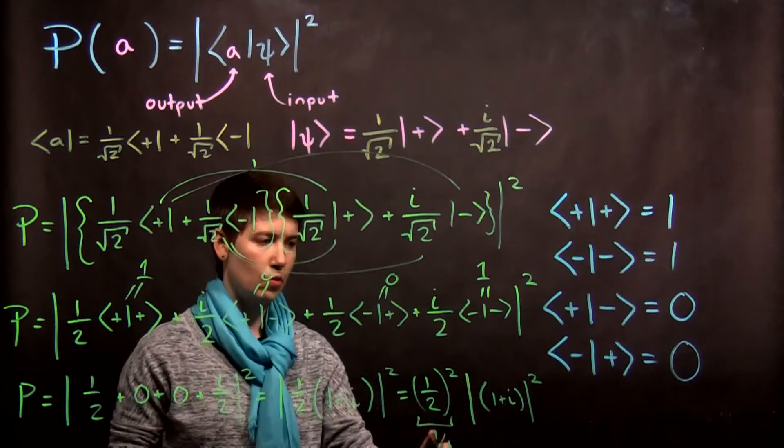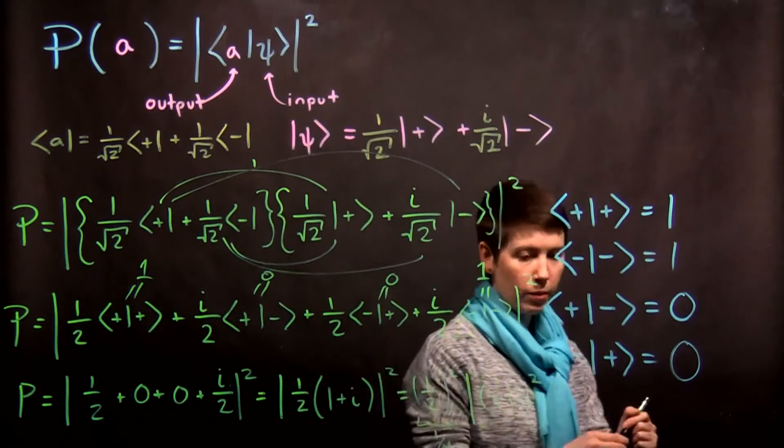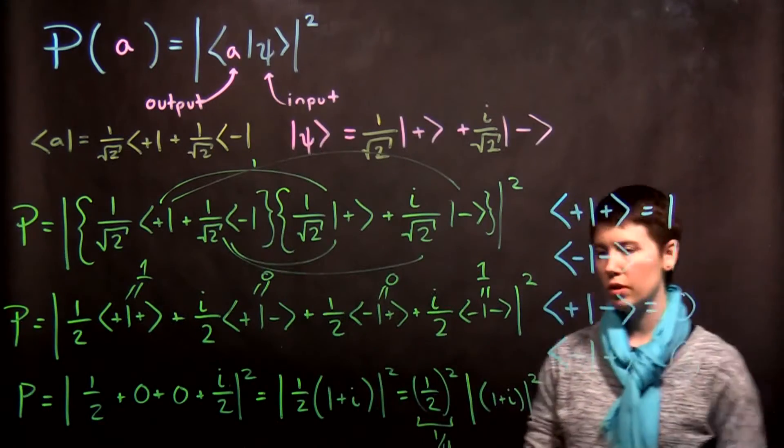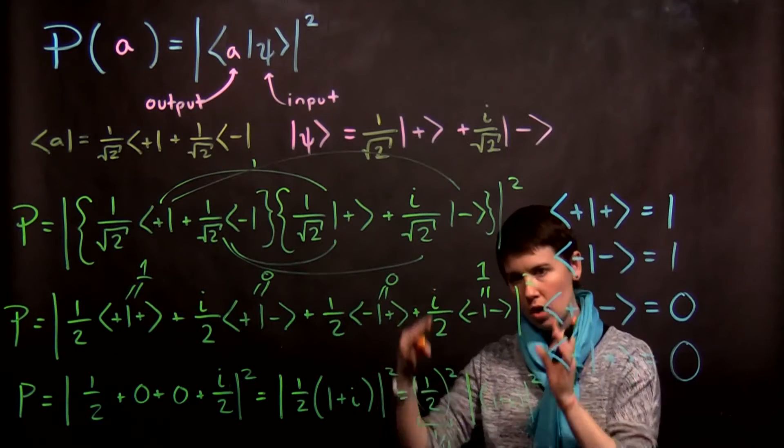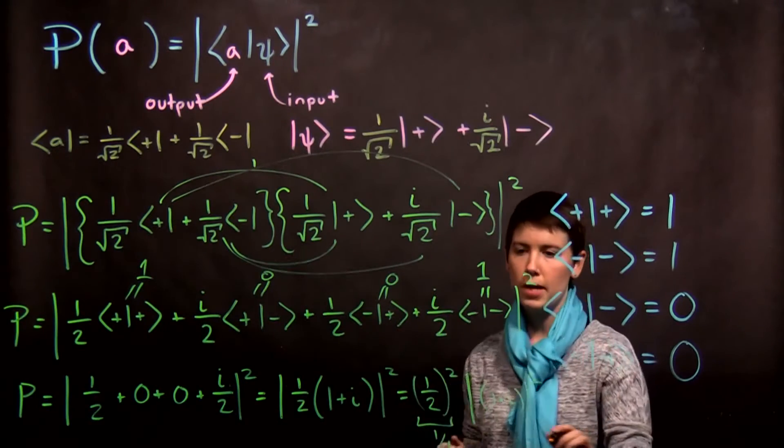So now this is a little bit tricky if you're not used to working with complex numbers. Again, what we need to do is take its complex conjugate and multiply it by itself. And so its complex conjugate is one minus i multiplied by one plus i.